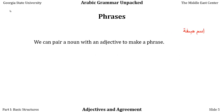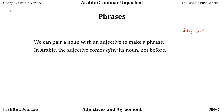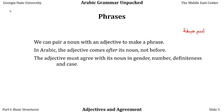We can pair a noun with an adjective to make a phrase, or add several adjectives to the same noun. Ism siffa is the word for phrase in Arabic — it literally means noun-adjective. In Arabic, the adjective always comes after its noun, not before like in English. And the adjective must agree with its noun in gender, number, definiteness, and case.